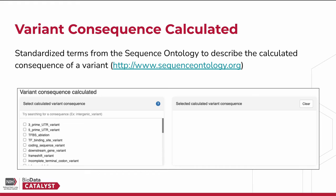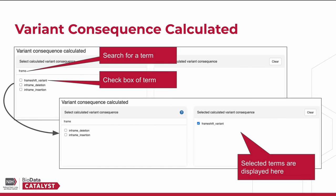The next section of the modal is called Variant Consequence Calculated. This field lists standardized terms from sequence ontology to describe the calculated consequence of a variant. For more information, you can visit http://www.sequenceontology.org. The functionality for searching and selecting a term of interest is the same as the Gene with Variant field. Let's say we're interested in frameshift variants. We can search 'frame' in the search bar. We can click on the box next to frameshift_variant and see that it is moved to the Selected Calculated Variant Consequence box.